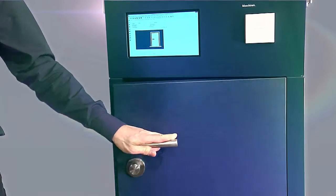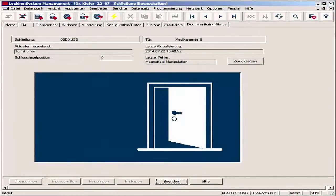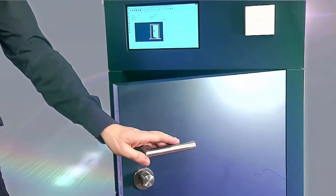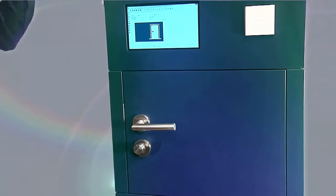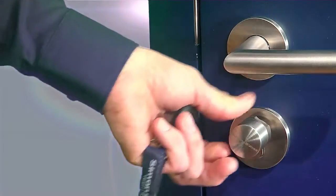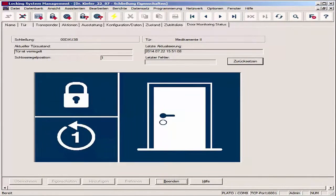If the door is opened, I receive a message on the locking plan. The screw's magnetic field changes and the change in status is forwarded. If I close and lock the door, the information is immediately displayed in the locking plan.